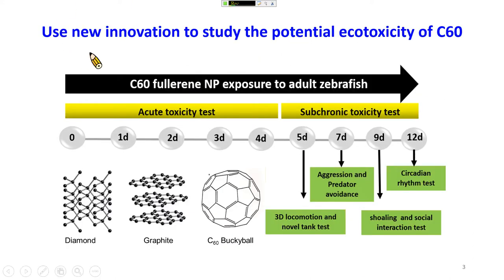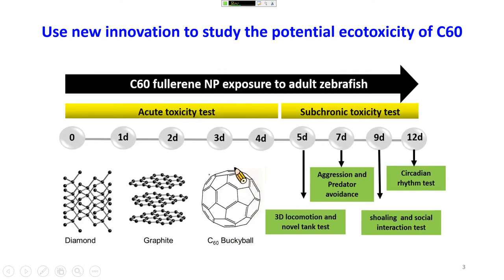Today I would like to use some examples to show you how to use our innovative tools to study the ecotoxicity of chemicals. For example, this is carbon-60 fullerene, a carbon-based material. We designed acute toxicity testing from day zero to day four, and sub-chronic or chronic toxicity from day five to day twelve.